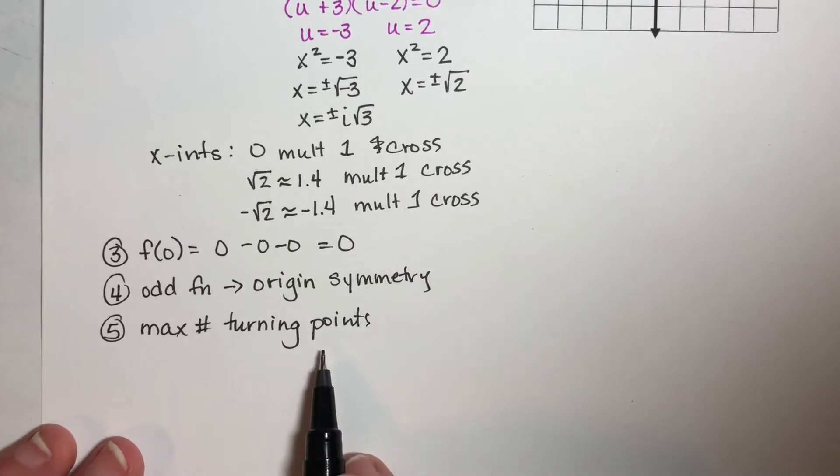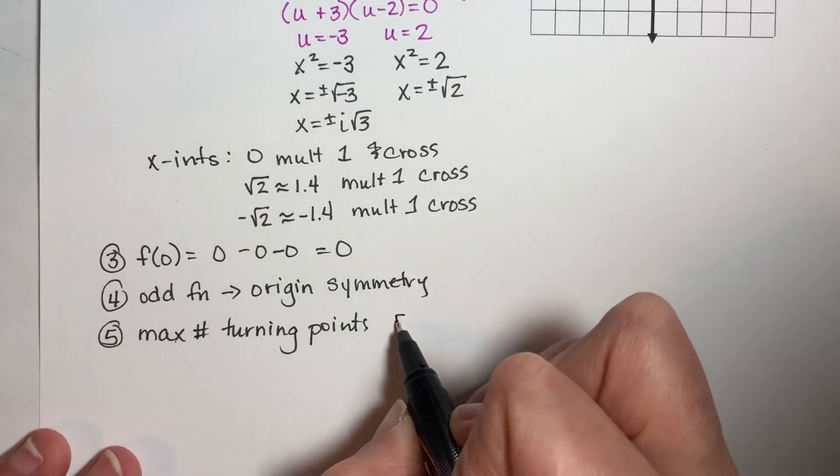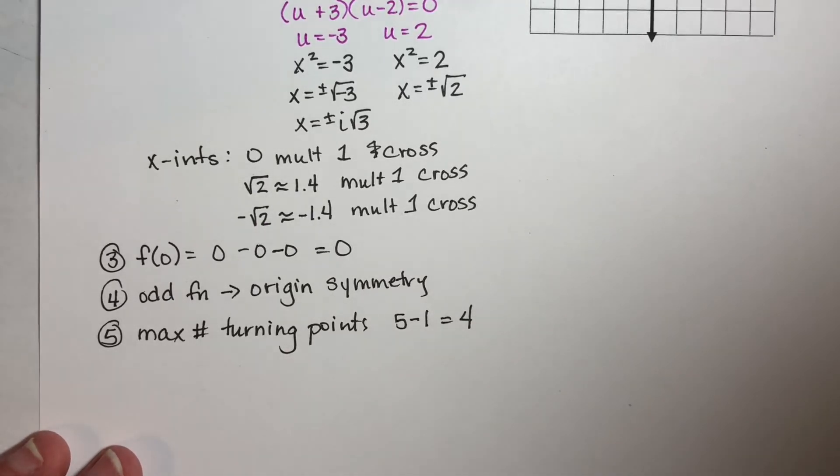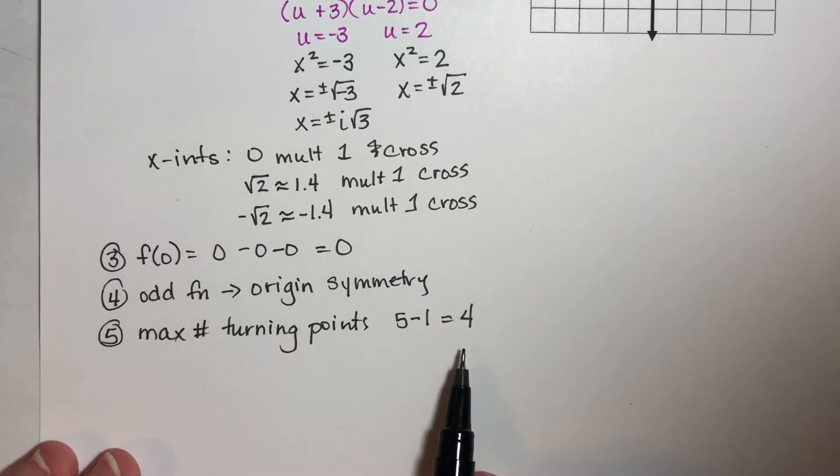And then the last step is the maximum number of turning points. And remember, this is the degree minus one. So it's five minus one. So I am allowed to have a maximum of four turning points. We don't have to use all the turning points, but that's the maximum number I am allowed to have.